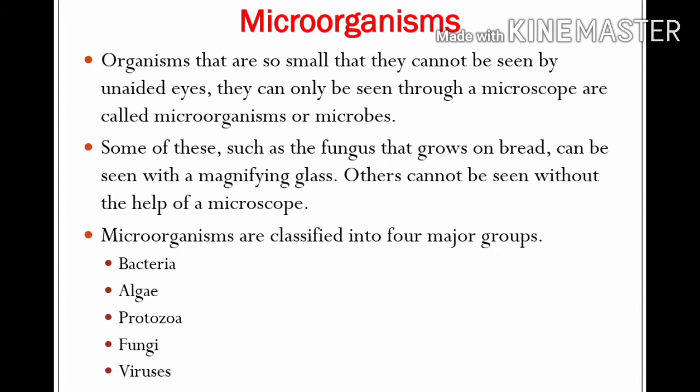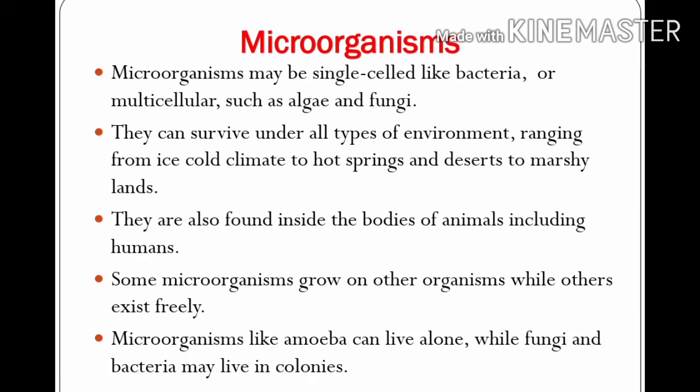Microorganisms are classified into four major groups: bacteria, algae, protozoa, fungi, and viruses. Microorganisms may be single-celled like bacteria, or multicellular such as algae and fungi. They can survive under all types of environments, ranging from ice-cold climates to hot springs and deserts to marshy lands. Some bacteria can grow in very hot climatic conditions while some can survive in ice as well. There are certain bacteria in our body which help in the process of digestion.